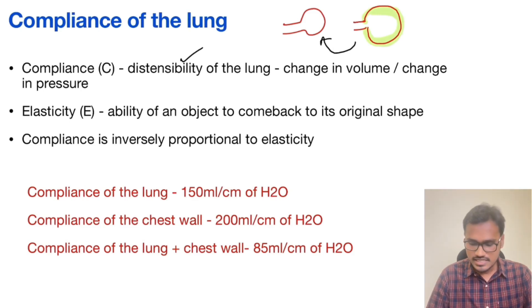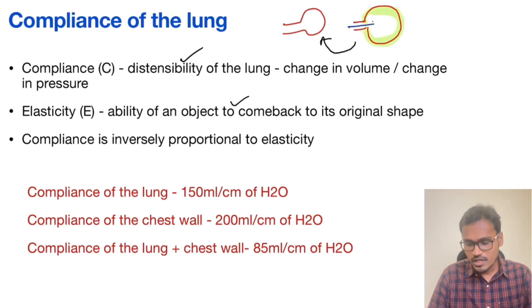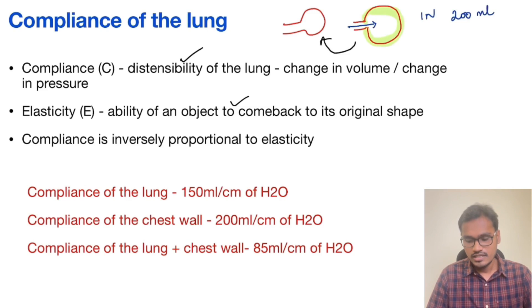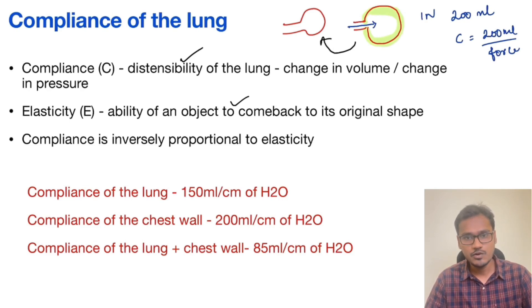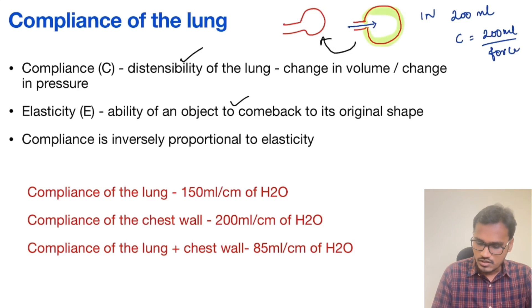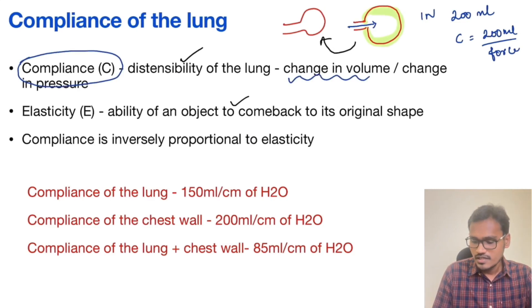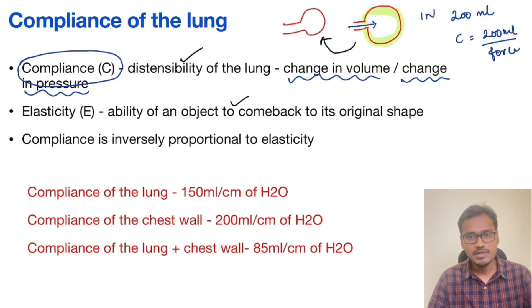Compliance is the distensibility and elasticity is the ability of the object to come back to its original shape. In the balloon example, if I give one newton of force and the balloon expands by 200 ml, then compliance is 200 ml divided by the force — change in volume with respect to change in force. But in the lungs, we use pressure instead of force, so compliance is defined as change in volume with respect to change in pressure, which can be transpulmonary or trans-thoracic pressure depending on whether we measure the lung or the chest wall cavity.